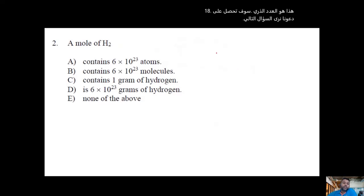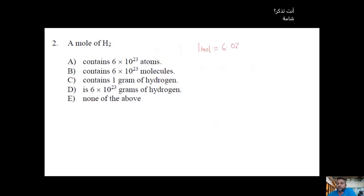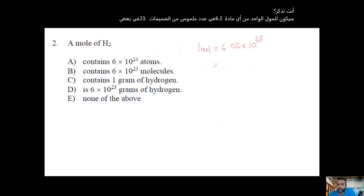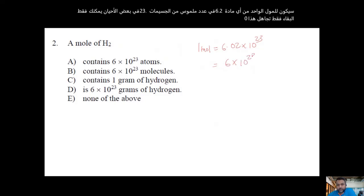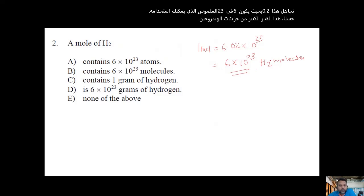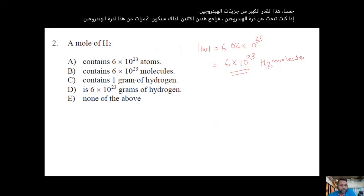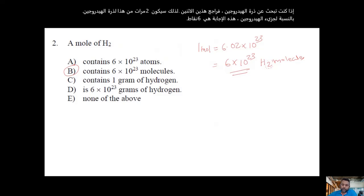A mole: one mole of any substance will have 6.02 × 10²³ number of particles. Sometimes you can just use 6 × 10²³. For hydrogen molecules, the answer is 6.02 × 10²³ molecules of hydrogen. If you are looking for hydrogen atoms, it will be two times that, since hydrogen molecules are diatomic.